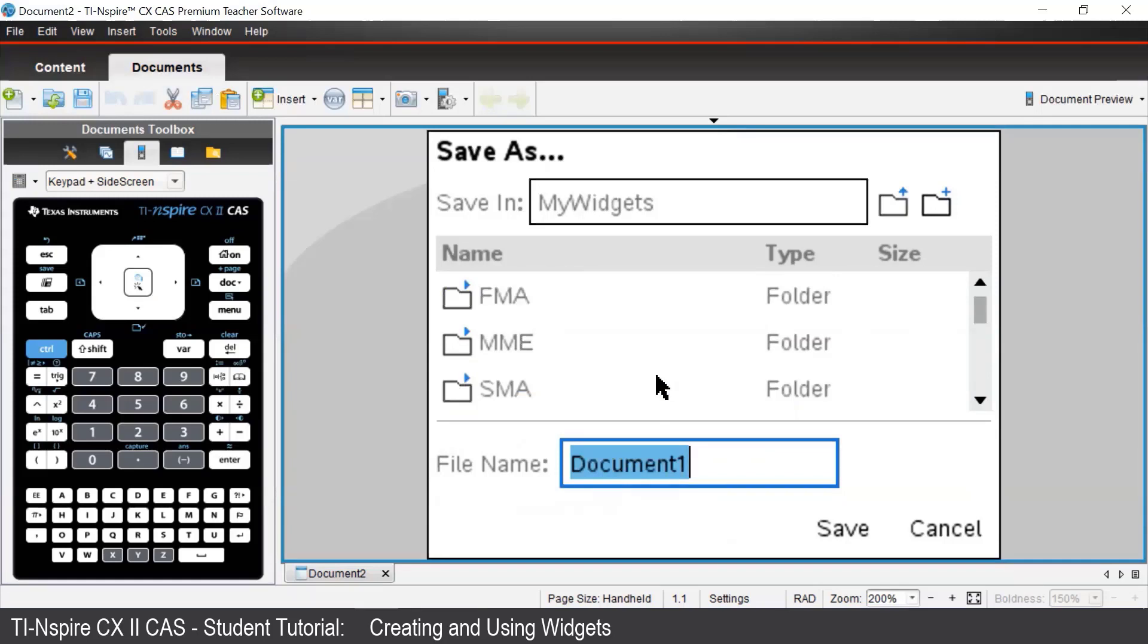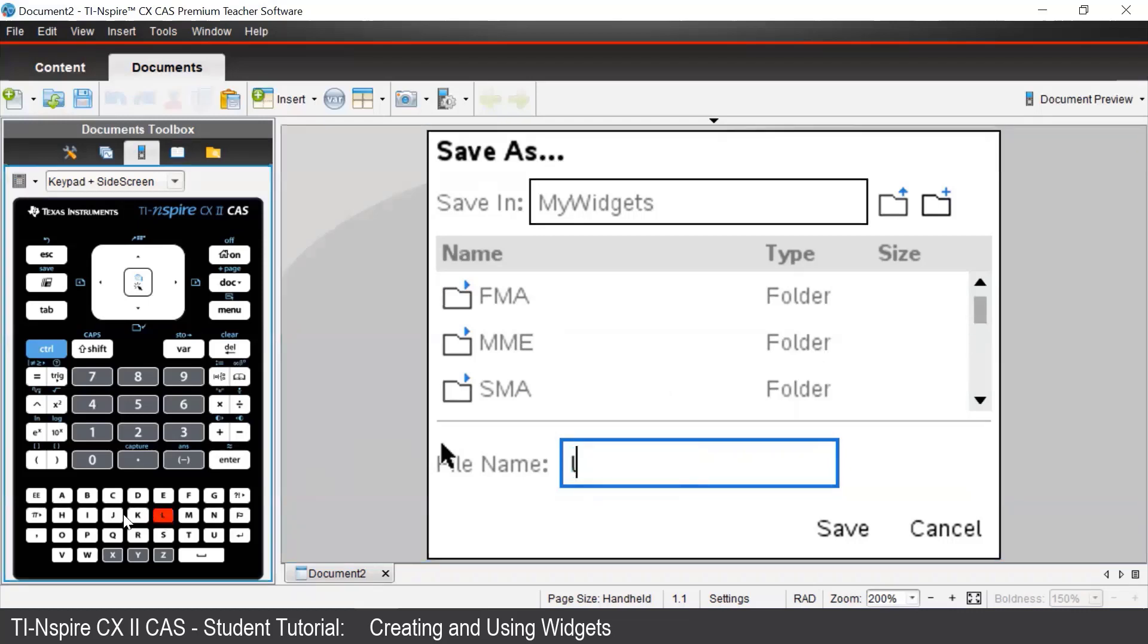This is what makes it a widget. We can name the file anything we want to. For example, we'll call our file linear. Now once we're all happy, we can press enter to save.